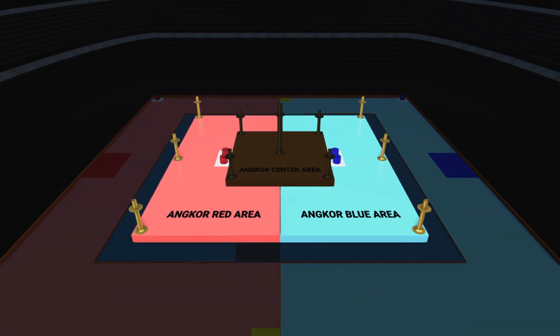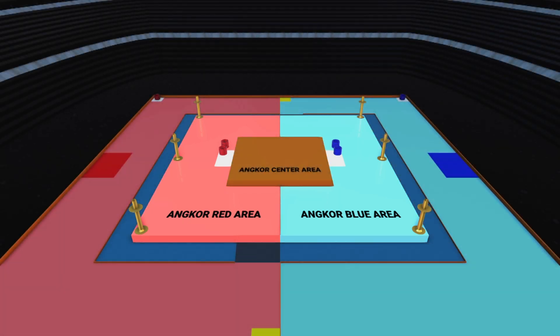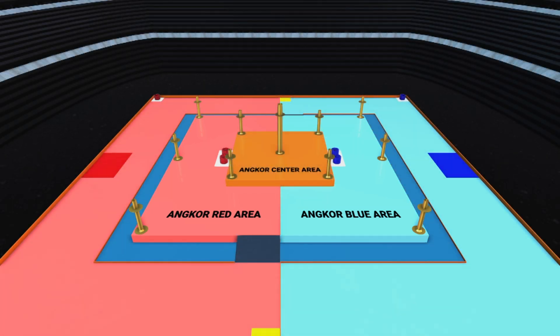Inside the Angkor Red area and Angkor Blue area, there are three poles which are type 1 poles, and two ring zones next to the Angkor Center area.